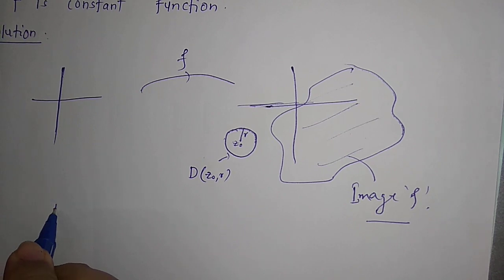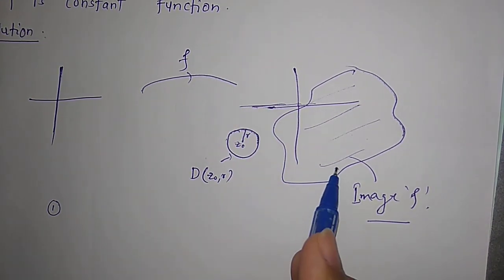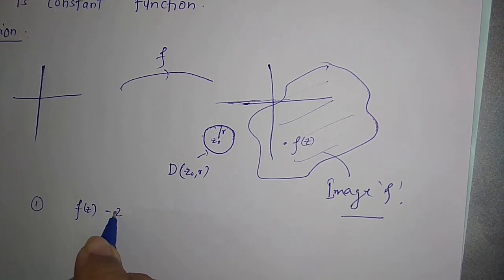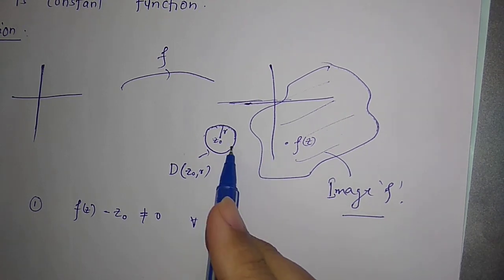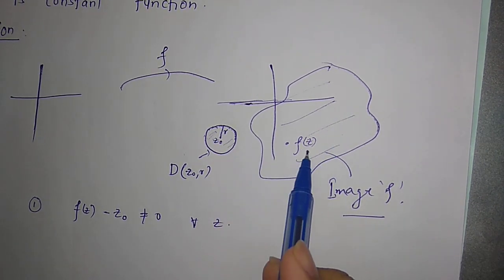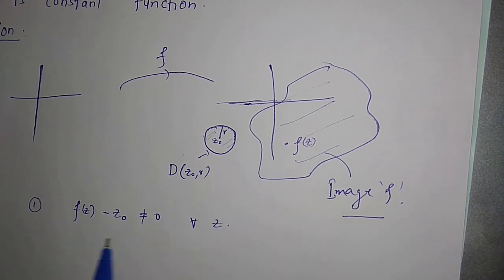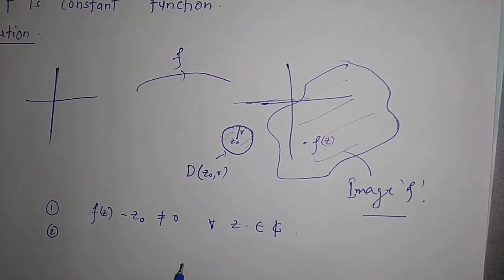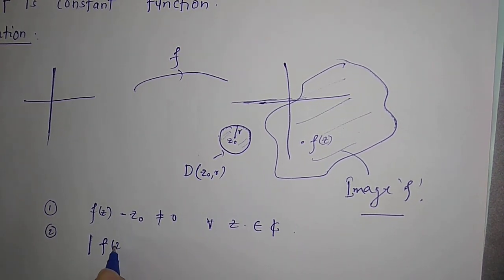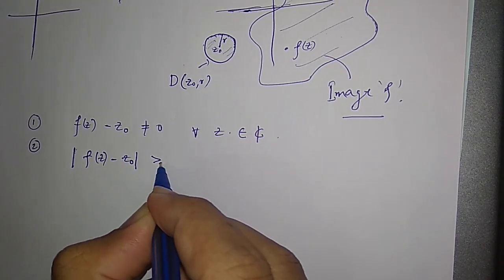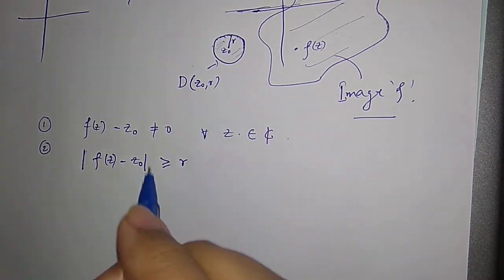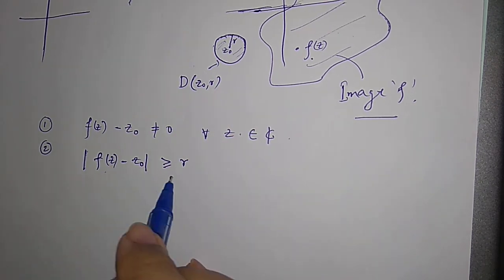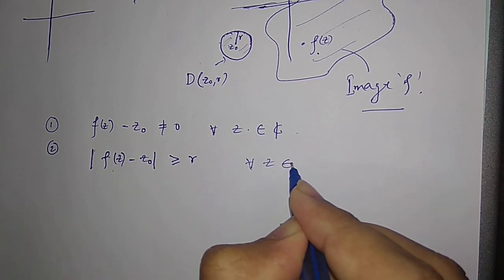So the first thing we get from this condition: since f(z) represents the image values, f(z) minus z0 is non-zero for all z, because the disk does not intersect the image of f — so f(z) cannot equal z0. Therefore f(z) minus z0 is non-zero for all z in ℂ. The second consequence is that the modulus of f(z) minus z0 is greater than or equal to r for all z in ℂ, because f(z) is outside the disk, so its distance from z0 must be at least r.